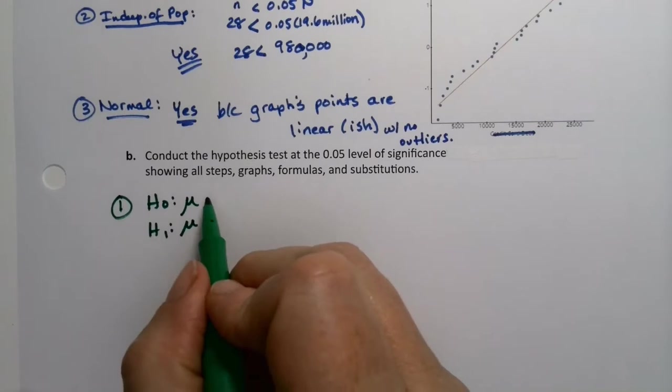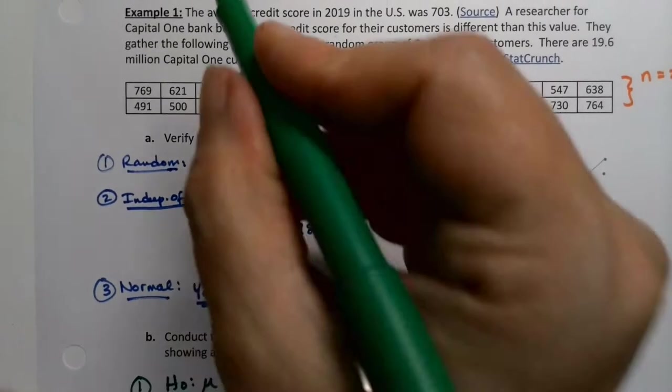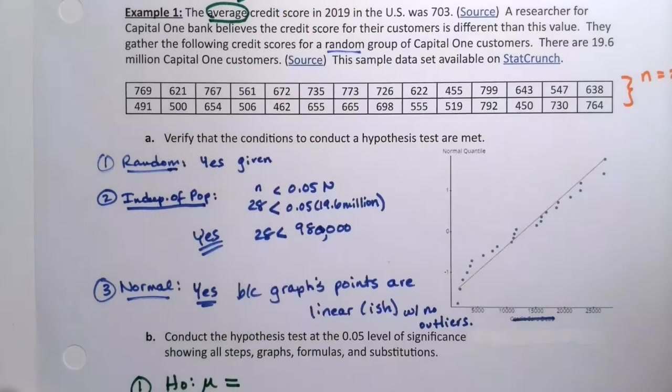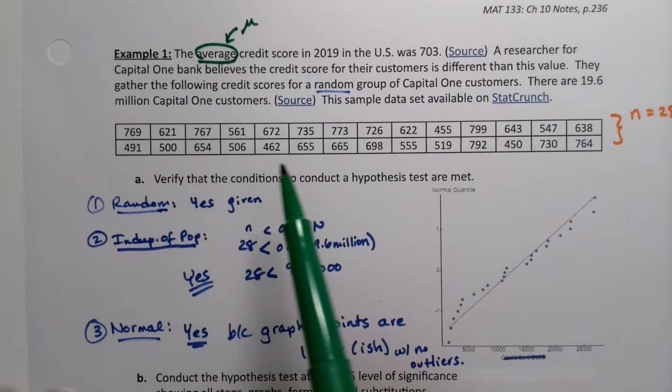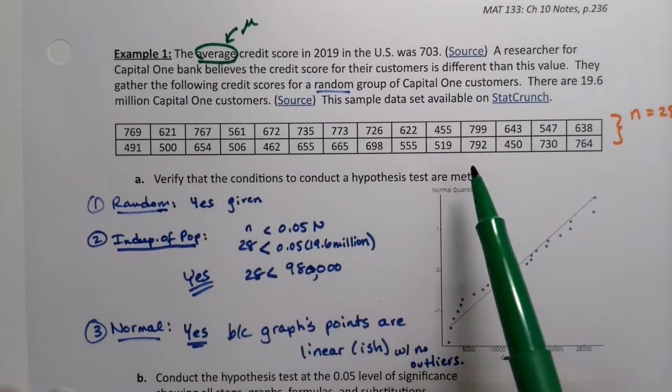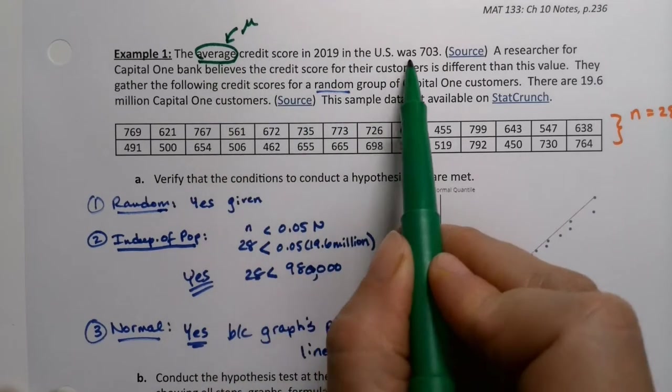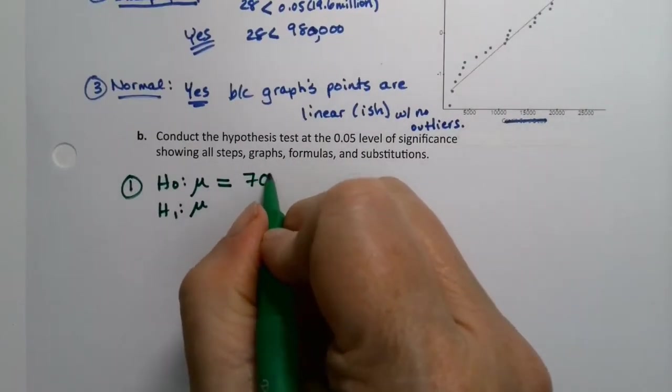Remember that the null hypothesis is always equals. The other way, by the way, that you know it's about means is it has the word average in it, which is a sign. But even if I hadn't said the word average in there, you would have known that this is a mean problem. Now what do we assume to be true? Well, we assume that the average credit score is 703. So you assume that it's 703.